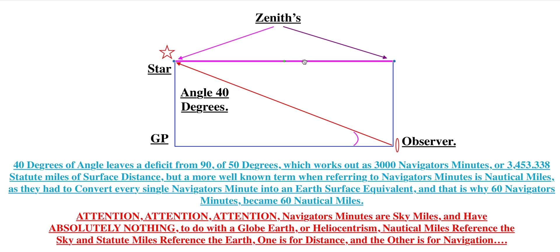So what they have to do is take all these navigator's minutes. Once they have determined that distance, which is a co-altitude distance, they then take those 3,000 navigator's minutes and bring them down to the surface of the earth and call them nautical miles. That's why there are 60 nautical miles per degree,